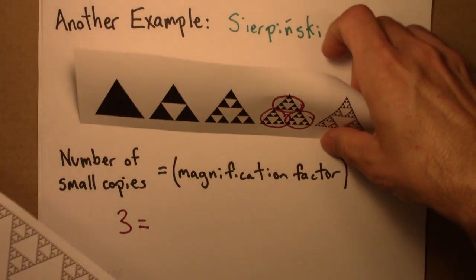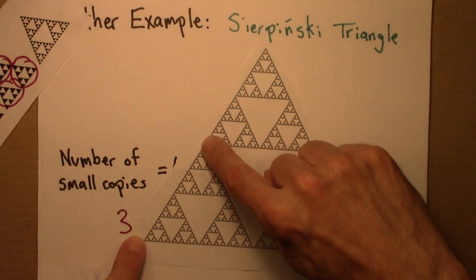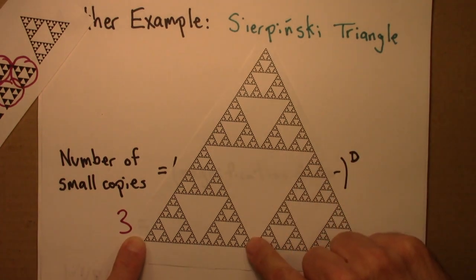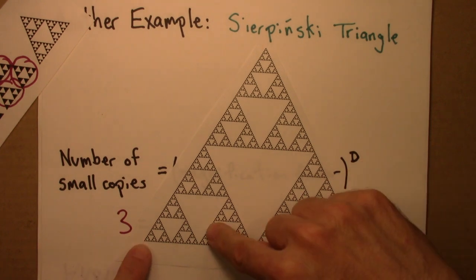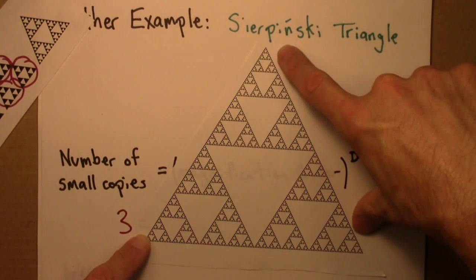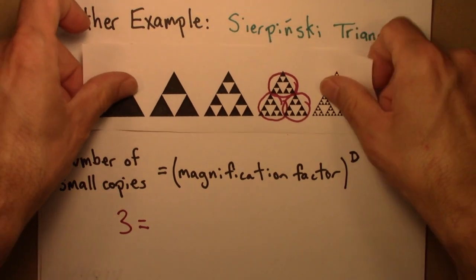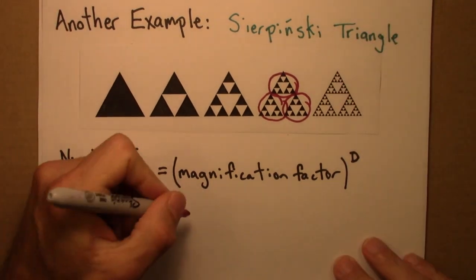I guess you could also see that here, that this triangle, this side is half of that. The base is half of that. So we need to magnify or stretch this triangle by two in order to have it be as big as the full one. So the magnification factor is two.